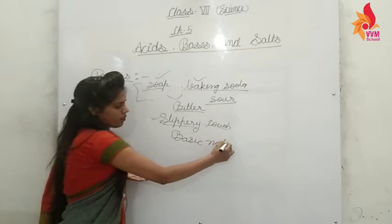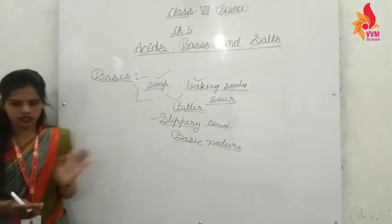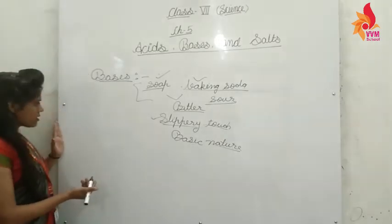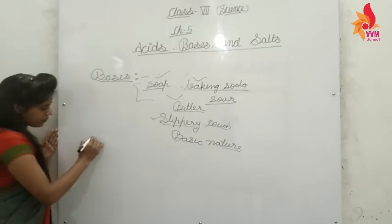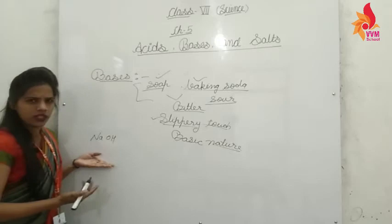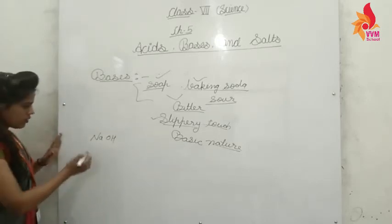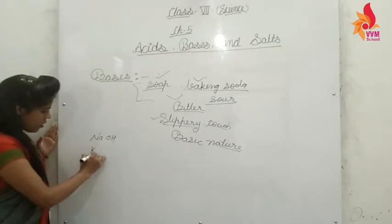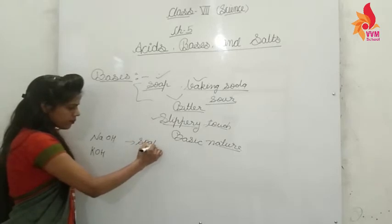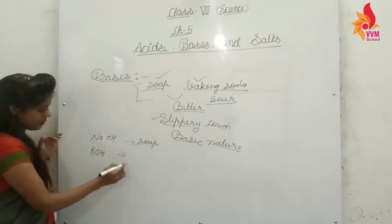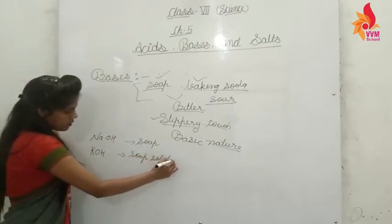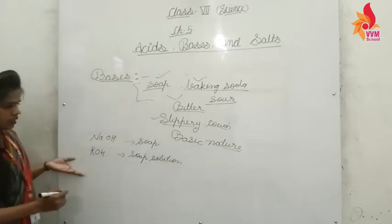So the nature is basic nature. Now next we are going to discuss about some types of bases. Sodium hydroxide - I think you need to write the name of this - sodium hydroxide is found in soap. And potassium hydroxide is found in soap solution.